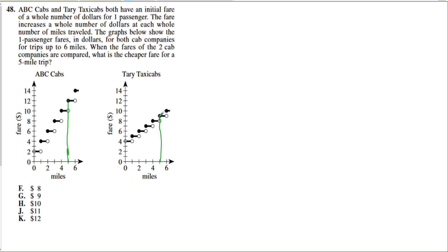The actual point we care about is the solid, filled-in one. ABC Cab's fare at 5 miles is $12, and Tarry Taxi Cab's fare is only $9. The question asks for the cheaper fare, so the answer is $9, choice G. That's my answer for problem 48.